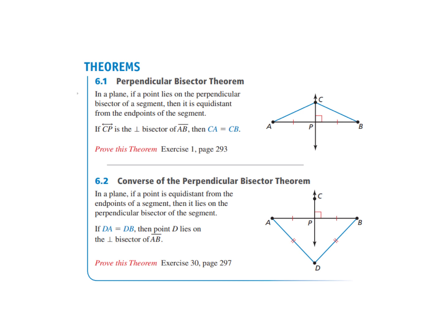We also looked at the converse of the perpendicular bisector theorem, which says if you have a point that is equidistant from the endpoints, then it must also lie on that perpendicular bisector.